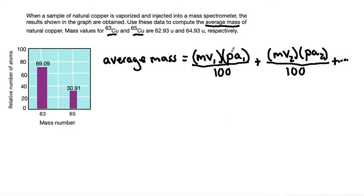The next thing is percent abundance is the same thing as relative number of atoms. Since our relative number of atoms of our two isotopes, if we add these two numbers up, 69.09 plus 30.91 equals 100.